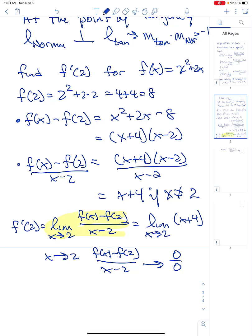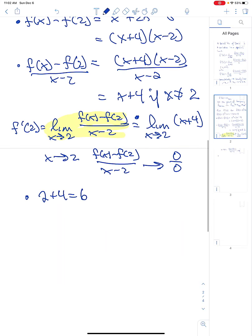So for us, this is two plus four, which is six. So y minus eight equals six times x minus two is the equation of the tangent line.